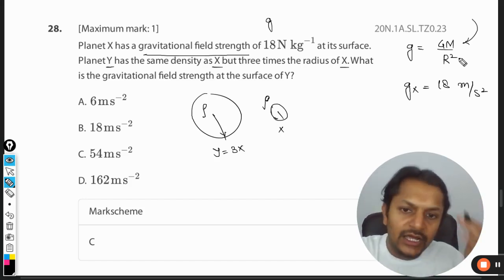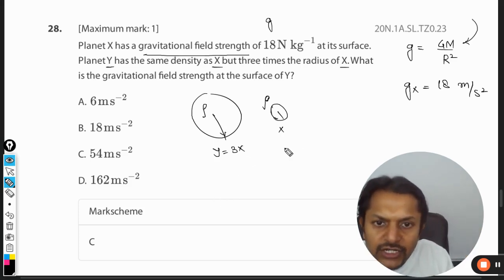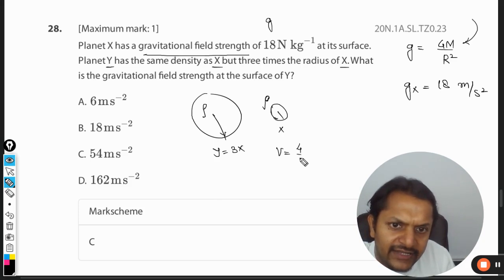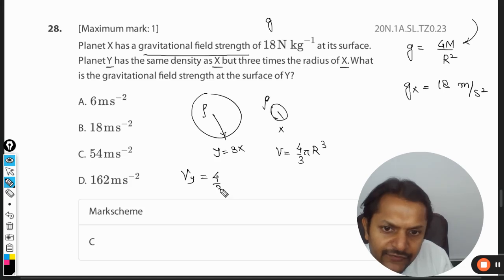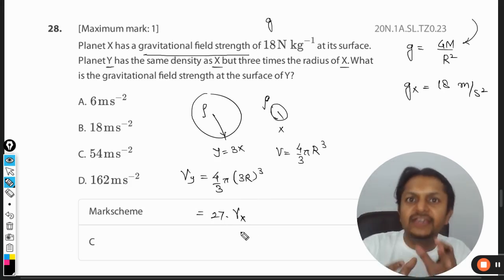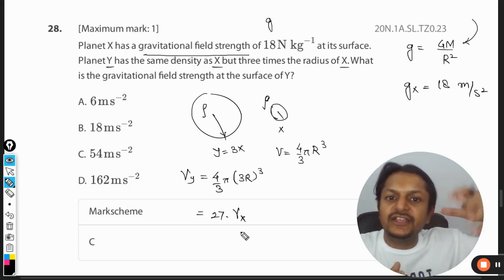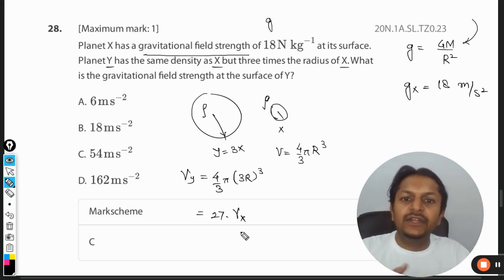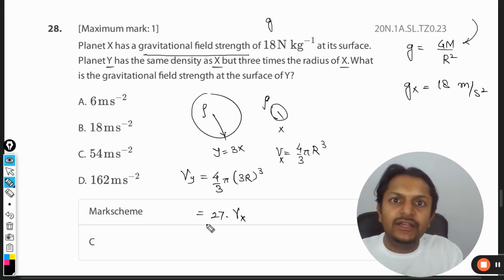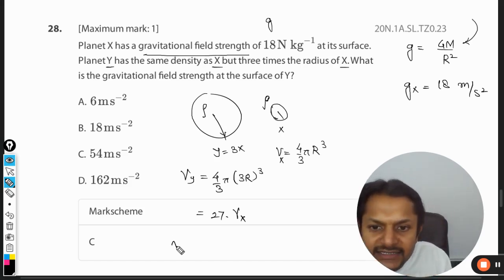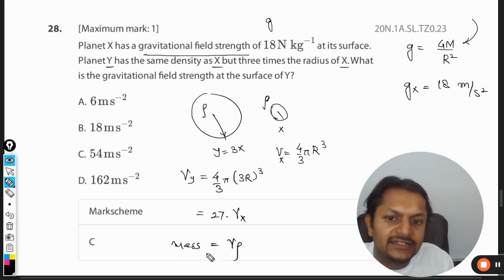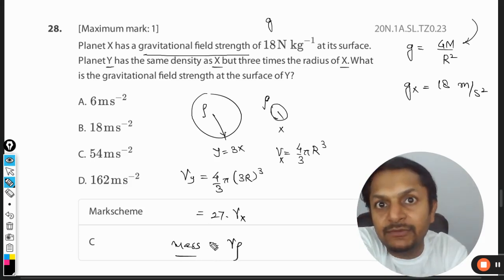Let's do that. So the radius is three times, so the volume for X can be written as 4 by 3 π R cubed, and volume for Y will be written as 4 by 3 π (3R) cubed, which becomes 27 times the volume of X. 3 has been separated from the equation, so 3 raised to power 3 is 27. Every other thing can be written as the volume of planet X. So the volume of Y becomes 27 times this, and the mass is given by the product of volume into density. Clearly the mass of Y will be 27 times bigger.